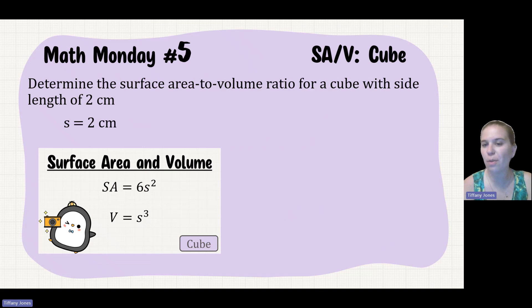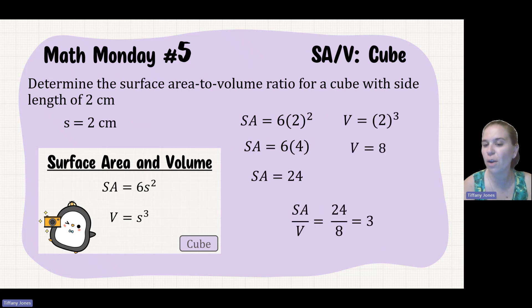Determine the surface area to volume ratio for a cube with a side length of two, where our s is gonna be two. So our surface area is 6s squared, s being two, so two squared is four. Six times four is 24. And then for our volume it's gonna be s cubed, so two cubed is gonna give me eight. So my surface area to volume ratio is gonna be 24 over eight, which is three.